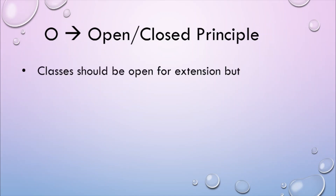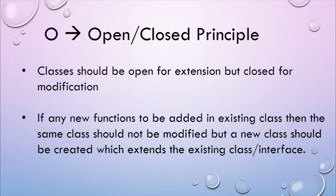The second one is the Open Closed Principle. This principle suggests that classes should be open for extension but closed for modification. What this means is that if class A is written by developer 1, and developer 2 wants some modification on the same class, then the second developer should easily do that by extending class A, but not modifying anything in class A itself. If any new functionality is to be added, a new class should be created which extends the existing class or interface. It is intended to mitigate risk when introducing new functionality — since you don't modify existing code, you can be assured it won't be broken. It reduces maintenance cost and increases product stability as well.